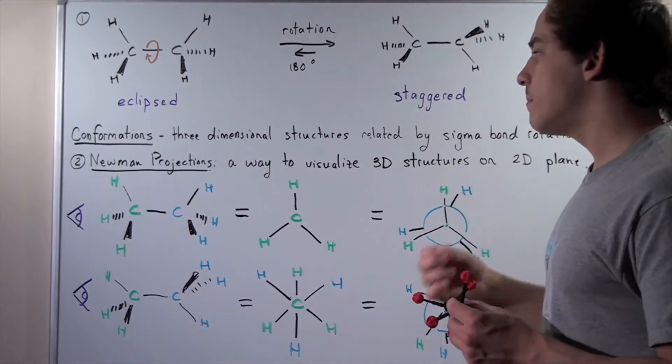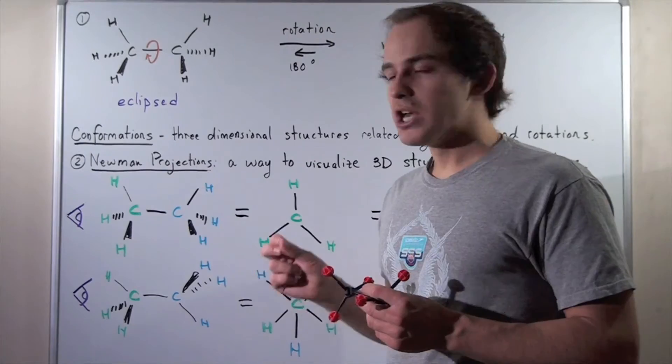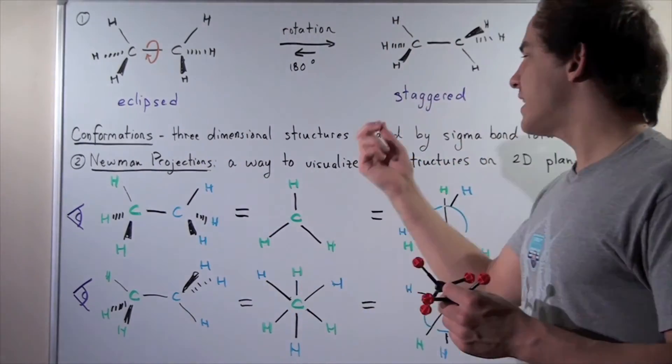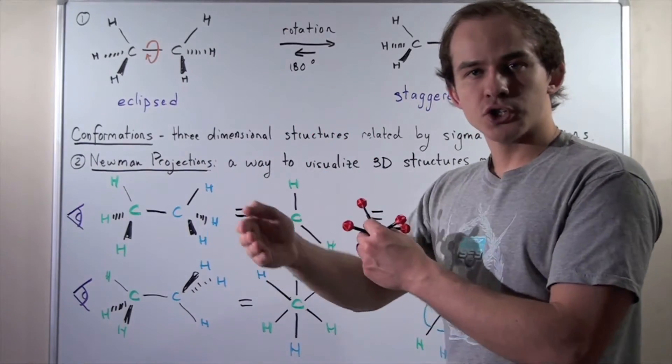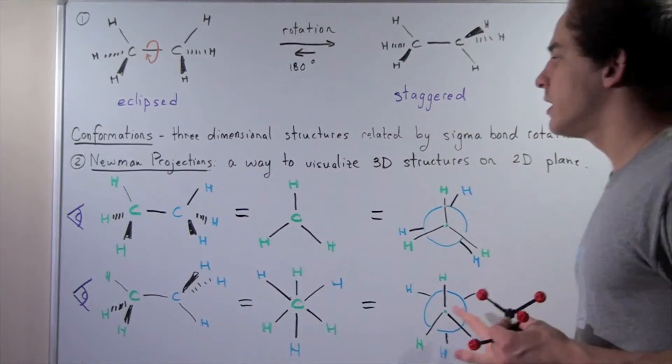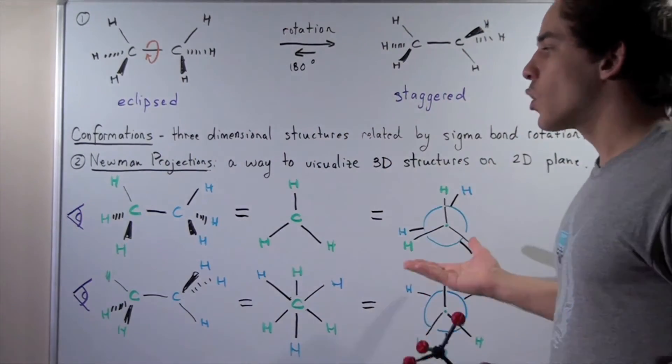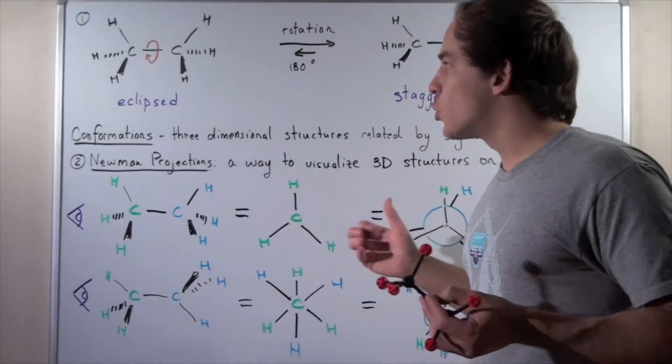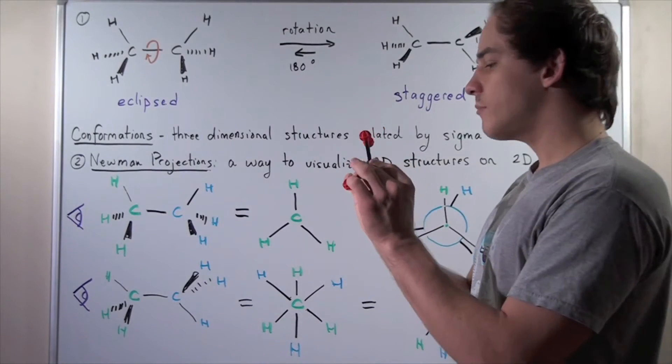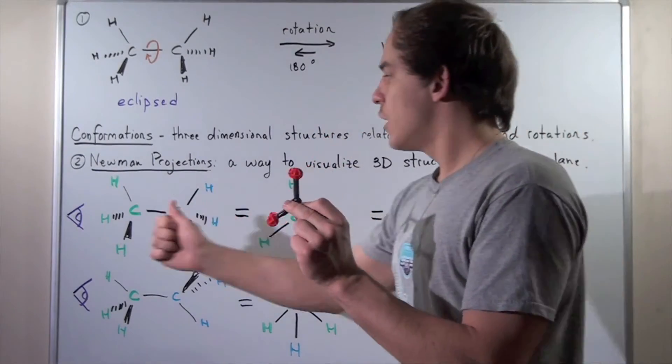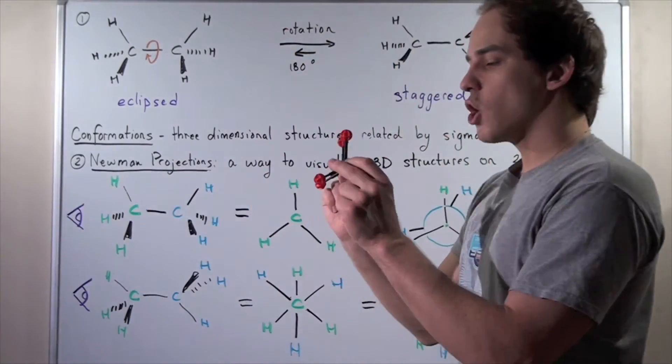Now let's talk about Newman projections. Newman projections are simply a way to visualize these three-dimensional structures on a two-dimensional plane like this whiteboard or a sheet of paper. Once again, let's take our eclipsed three-dimensional structure and look at the structure from this way down.